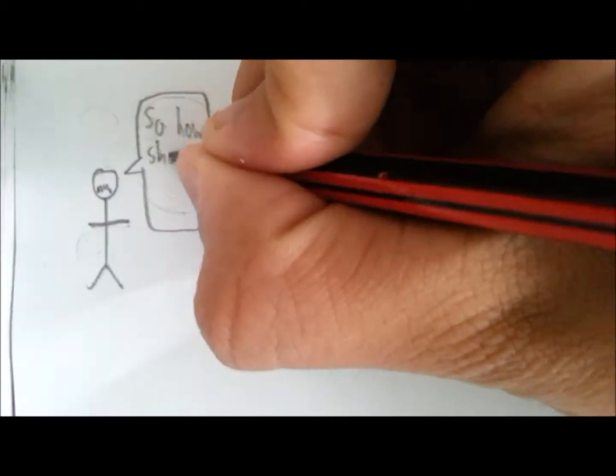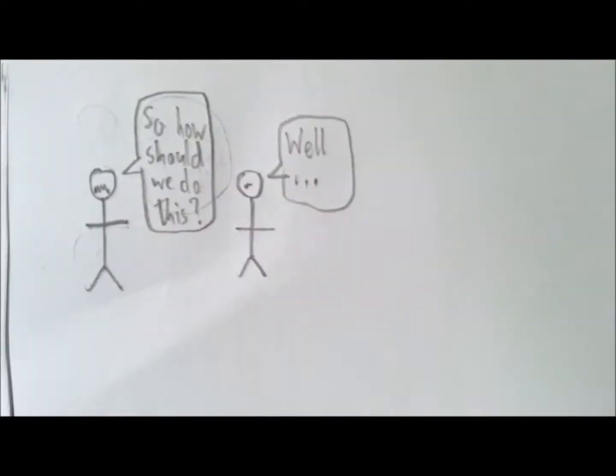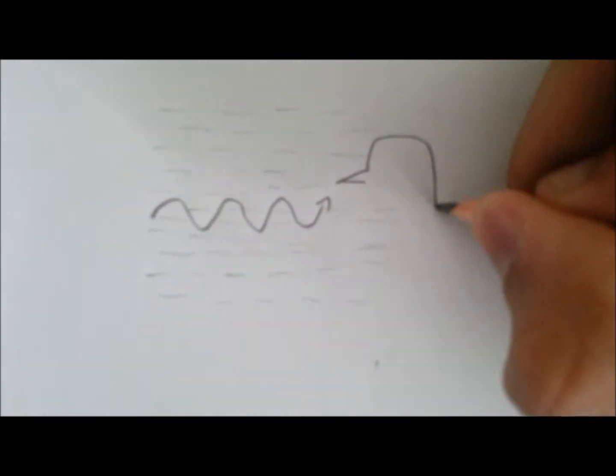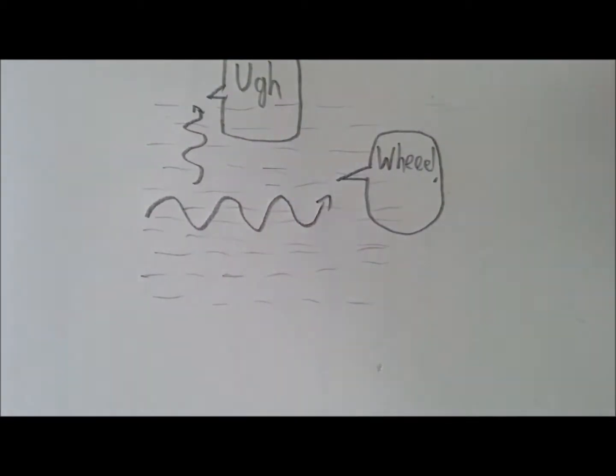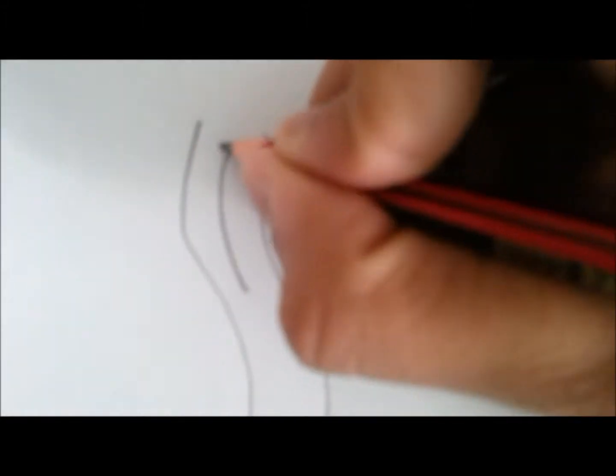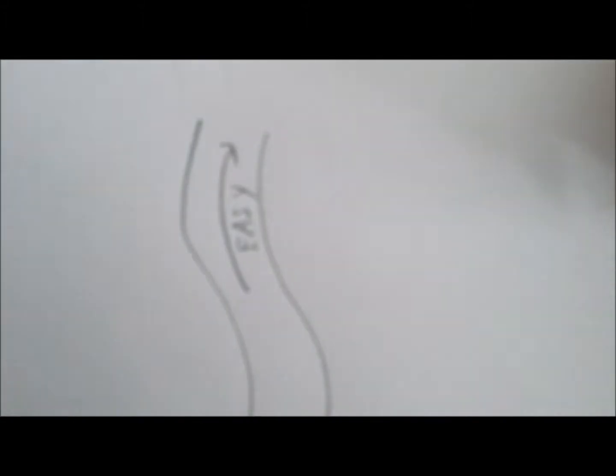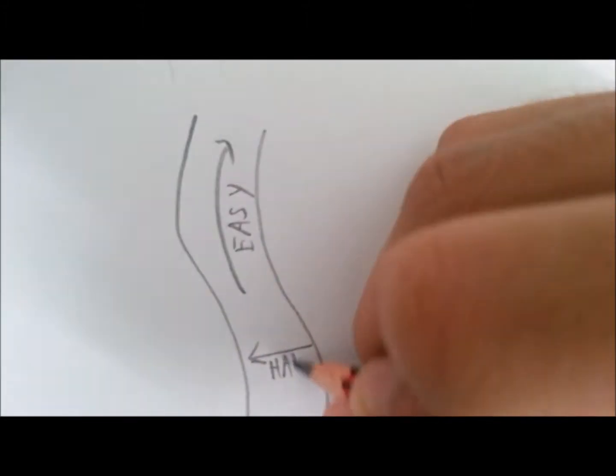So how did Michelson and Morley try to prove the existence of ether? Well, according to the theory of ether, light's speed changed depending on whether it moved in the same direction as ether or not. It's like trying to swim in a river. You would swim faster if you swam along with the river, but not if you swam across the river.